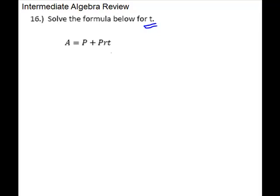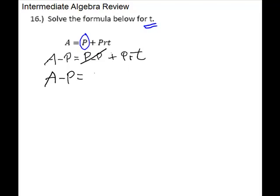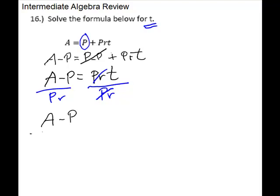Problem 16 is a formula, and we're solving for t to isolate it. The p and r are multiplied by t, so leave that for last. First take off the p by subtracting it — it cancels on the right side. On the left, write the new piece after: A minus p. Now on the right we're left with prt. The p and r are multiplied by t, so get rid of them in one step by dividing — put it under the entire piece. That isolates your t, and it's fine to leave the answer as that.